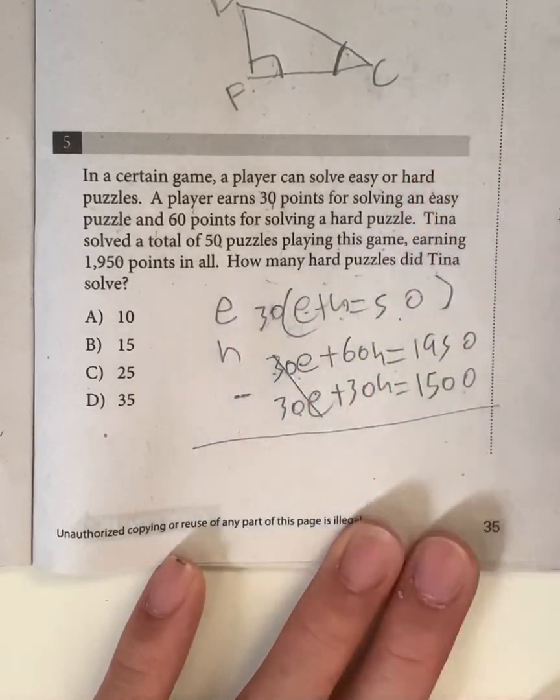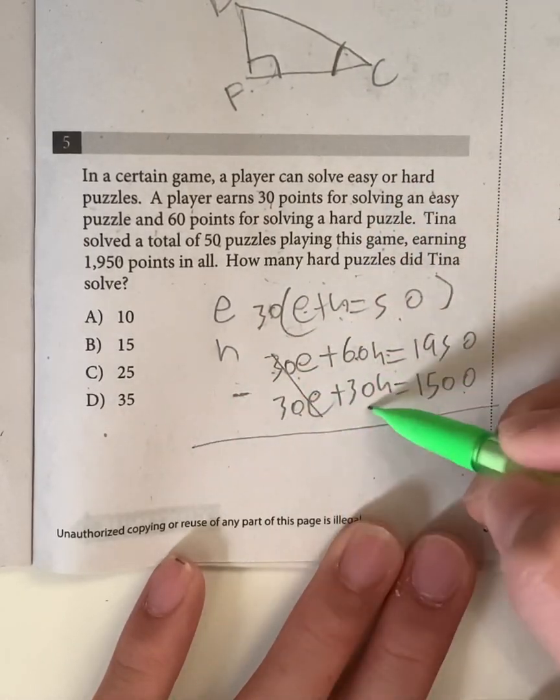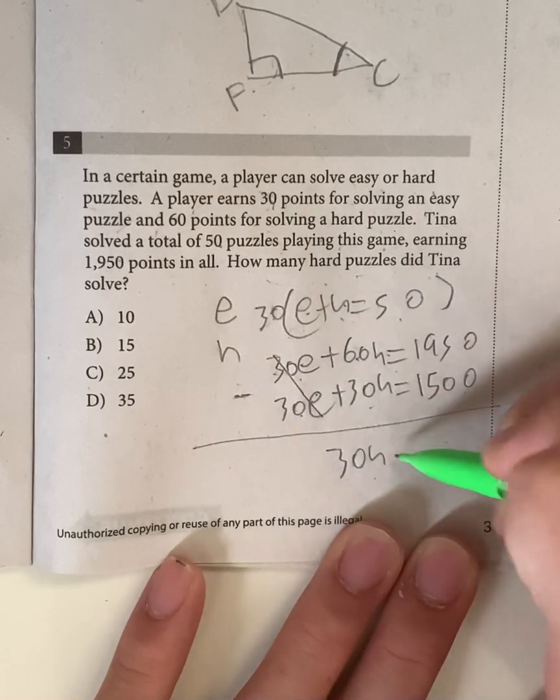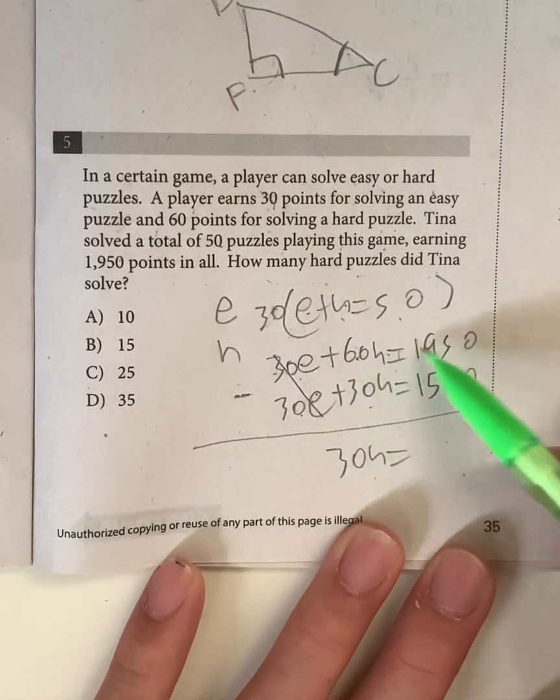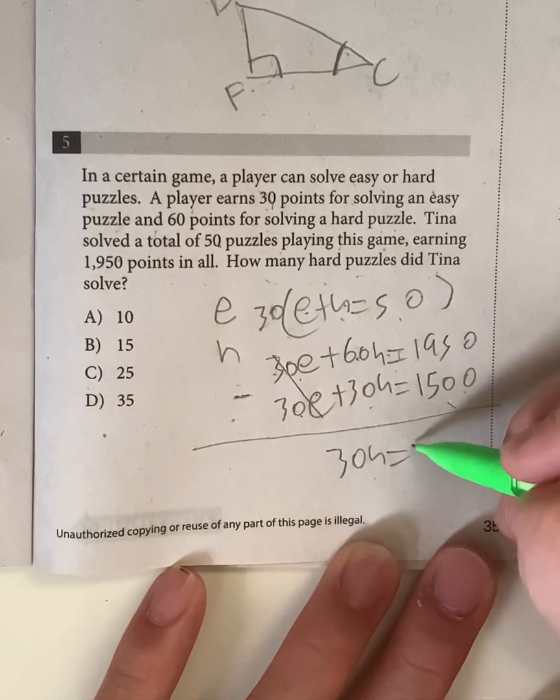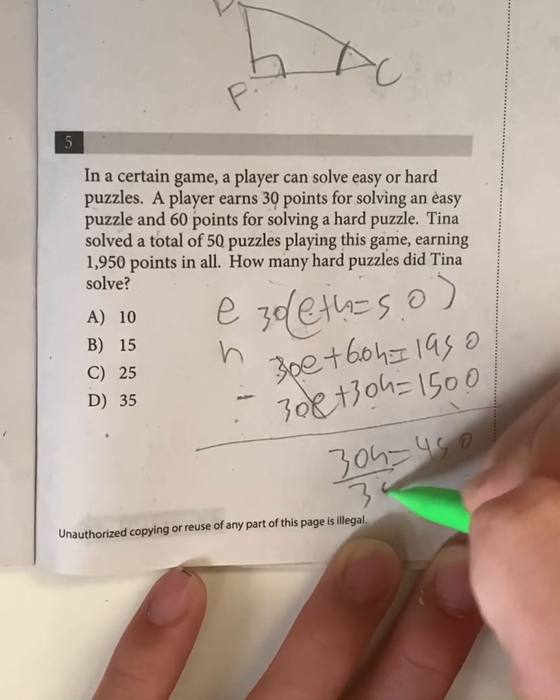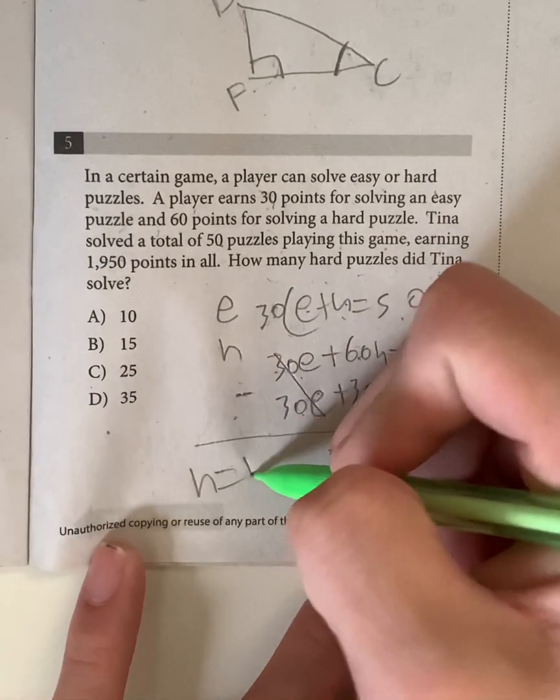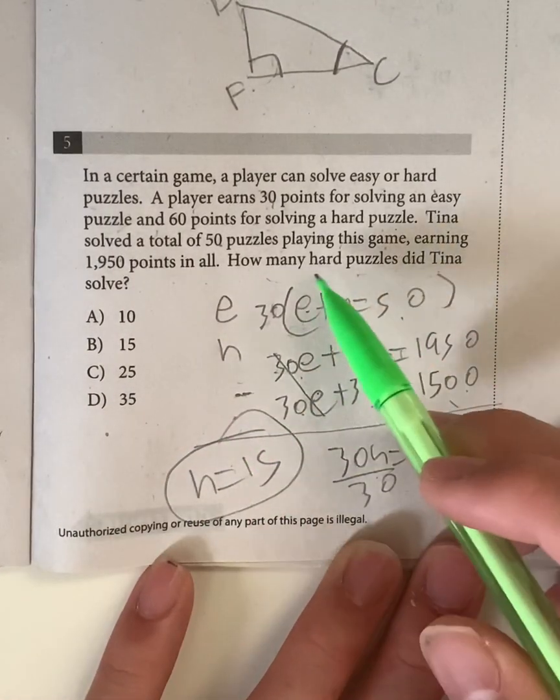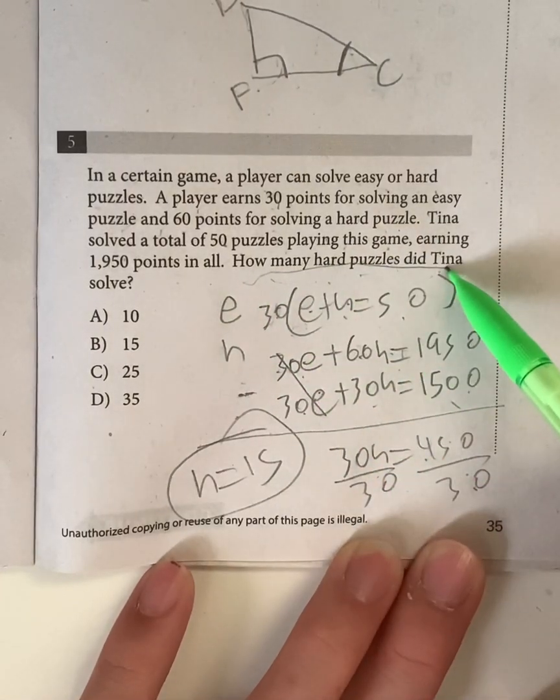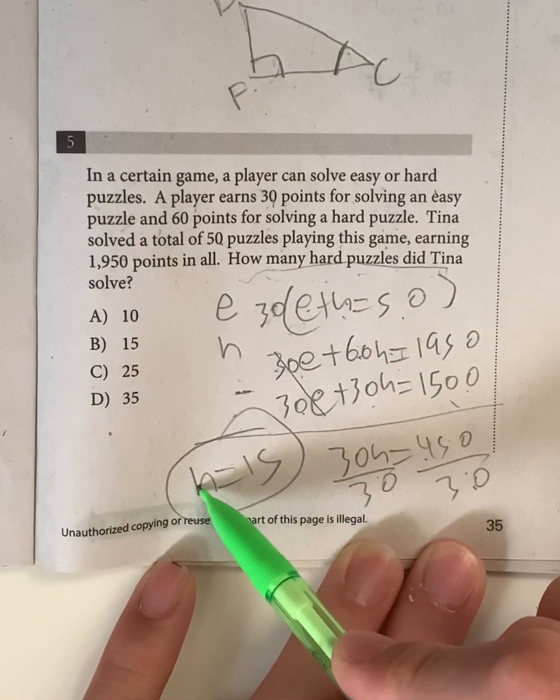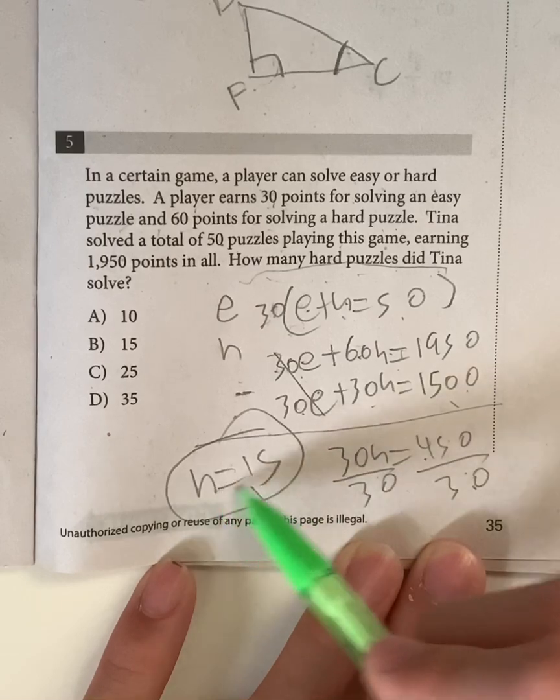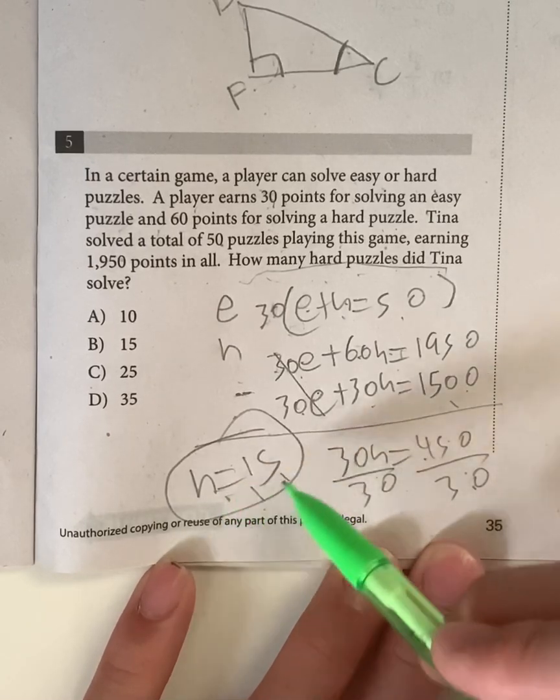And now we can use elimination, because we have 30E and 30E on both equations, so we have to subtract it. Once you subtract them, they cancel out. 60H minus 30H gives us 30H. And that's equal to 1950 minus 1,500, which is 450. Divide both sides by 30, giving us H = 450 divided by 30, which is equal to 15. And the question is asking for how many hard puzzles do we have? Well, the hard puzzles is 15, because H equals 15. Remember, H represents the hard questions, meaning your answer has to be B.